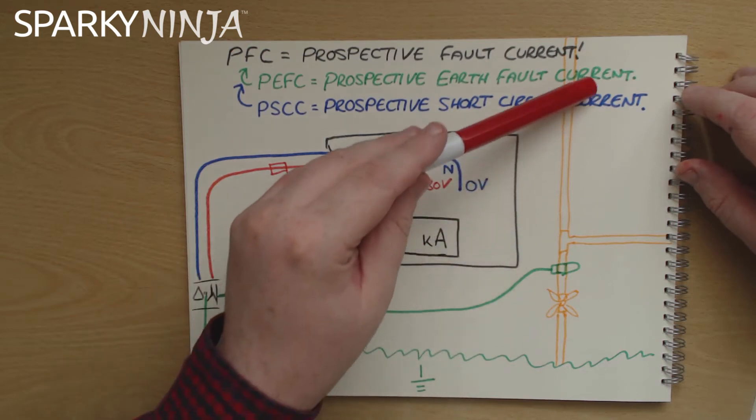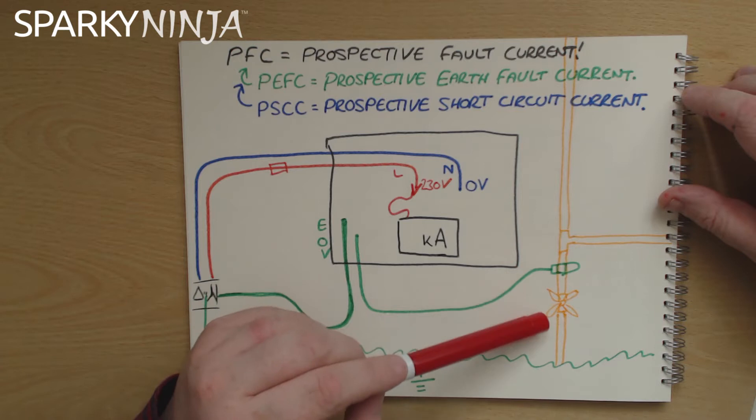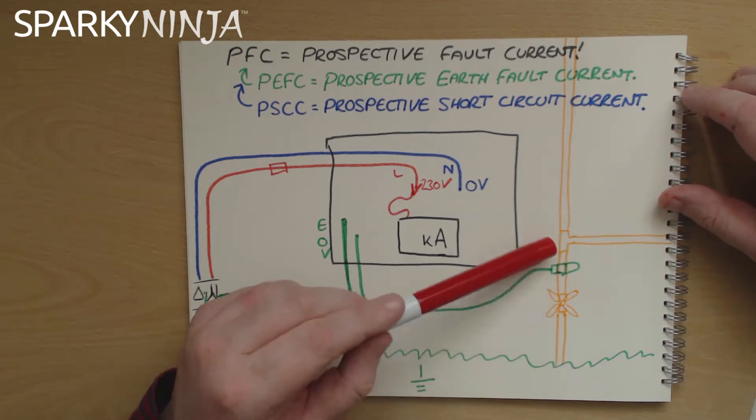Then over here you've got a main bond for a water pipe, so an extraneous conductive part there.